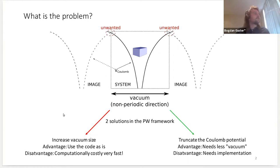What people normally do to avoid or reduce the effect of this interaction is to increase the vacuum size. The advantage is that you can use the DFT code as it is, but the disadvantage is that it becomes computationally costly very fast, especially in the plane wave framework.